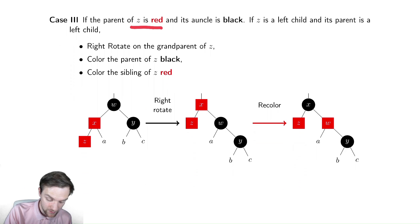If the parent of Z is red and its uncle is black, so my parent is red and my uncle is black.